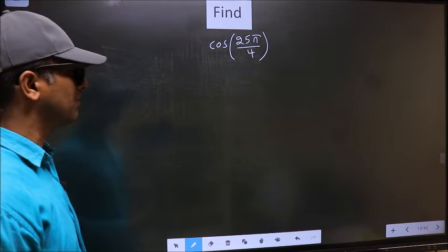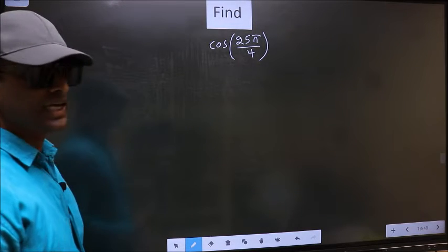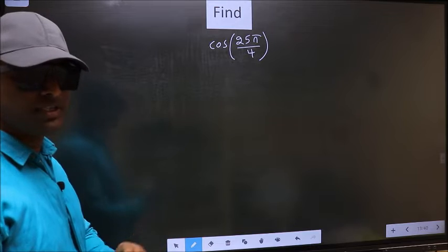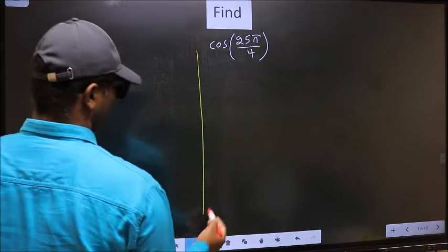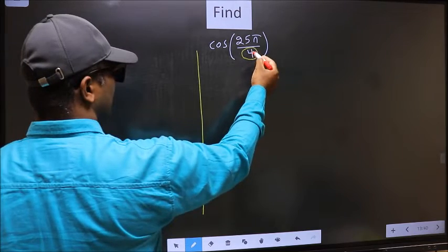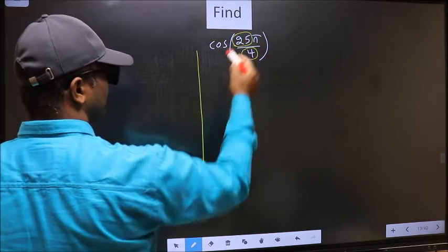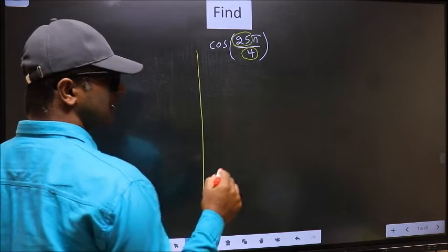Find cos 25π by 4. To find this, we should follow this method. In the denominator we have 4. In the numerator 25. Now you should check.